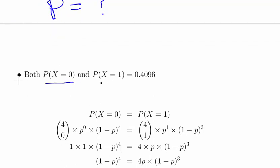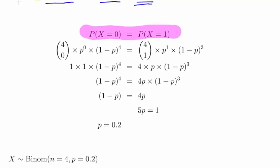Now we know that both probability of X equal to 0 and the probability of X equal to 1 is 0.4096. So essentially what we could do is just let them equal to each other and use the binomial coefficient formulas to actually try and tease it out.